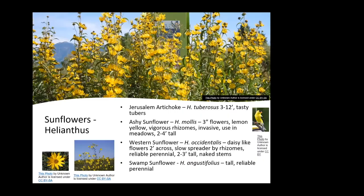The sunflowers — ashy sunflower, western sunflower, swamp sunflower, and Jerusalem artichoke — are all natives. People like to dig up and eat the Jerusalem artichoke roots, and apparently they're very tasty. In a meadow-type situation or a larger garden, these sunflowers would be great to include.